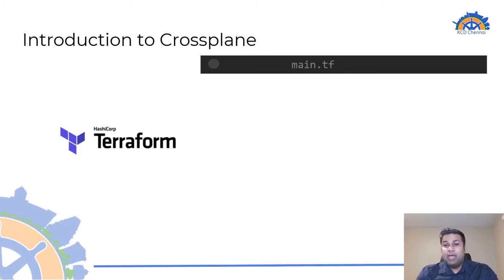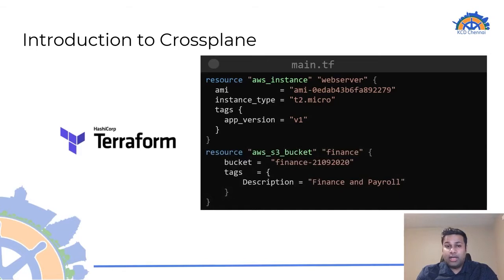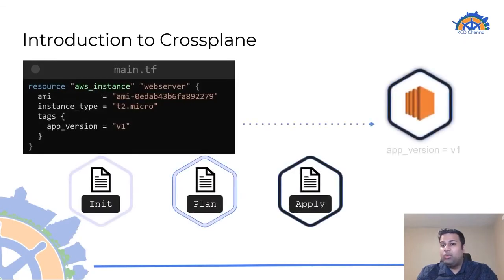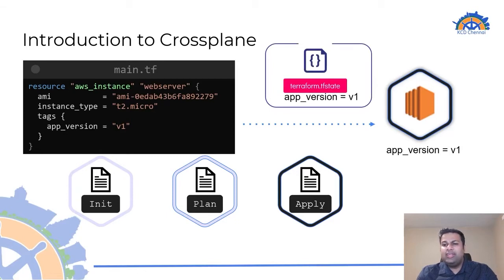Let's take Terraform as an example. It uses HCL, or HashiCorp Configuration Language. Here we have a sample configuration file to create an EC2 instance and an S3 bucket in AWS, written in the HCL language that Terraform understands. Although it is a simple declarative language, that's yet another tool that the users need to learn. This configuration, when applied, will create an EC2 instance in AWS with the tag app_version equal to v1. Terraform will also create a state file that holds all the details of the AWS instance, including that tag.